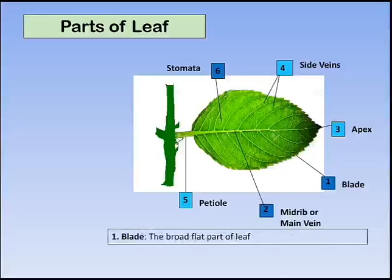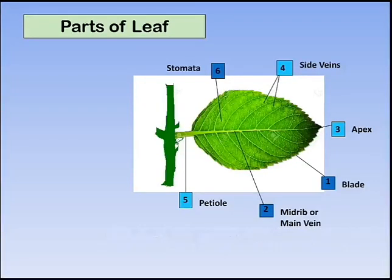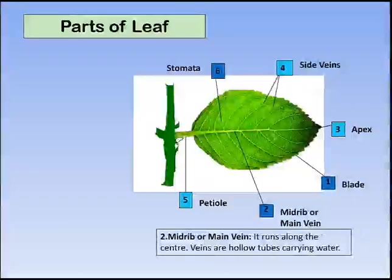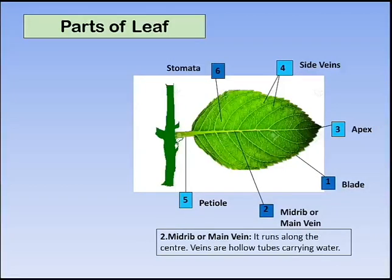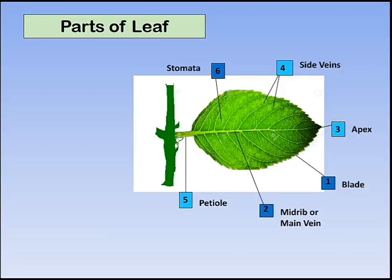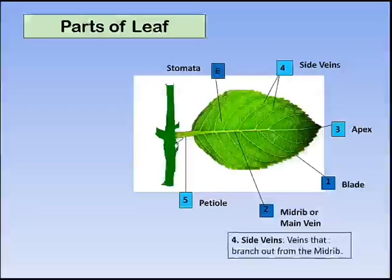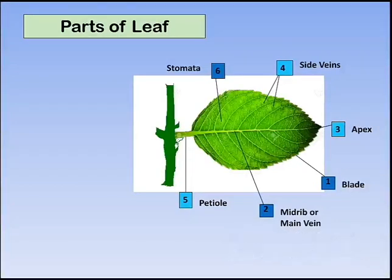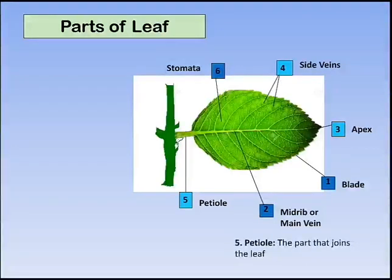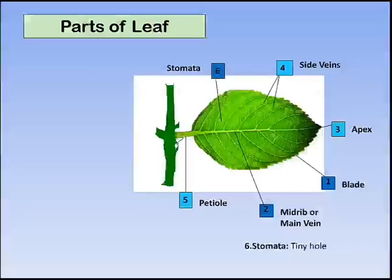The blade is the broad, flat part of the leaf. The main vein runs along the center. Veins are hollow tubes for carrying water. The apex is the tip of the leaf. Side veins are veins that branch out from the midrib. The petiole is the part that joins the leaf to the stem. Stomata are tiny holes.